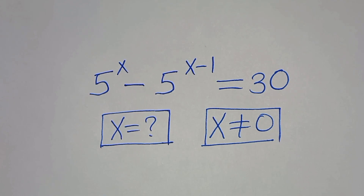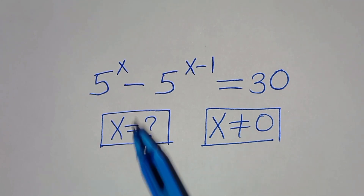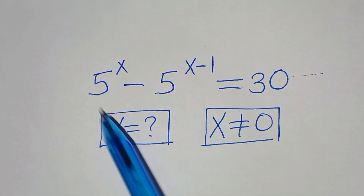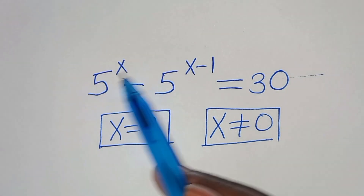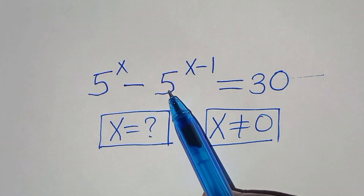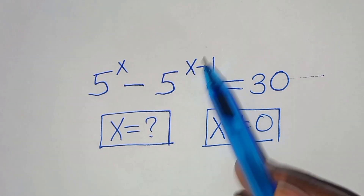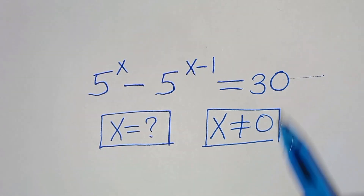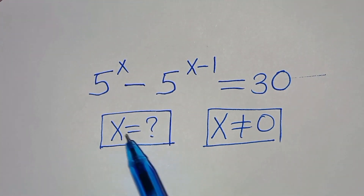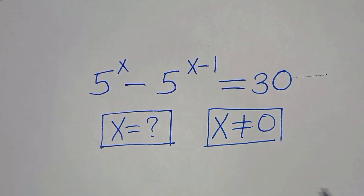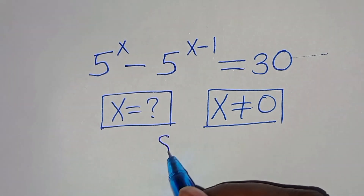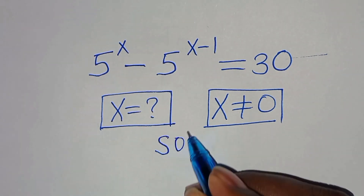Hello everyone, you are welcome to solve this nice exponential equation: 5 to the power of x minus 5 to the power of x minus 1 is equal to 30. What is the value of x, given that x is not equal to 0? Let's present the solution from here.